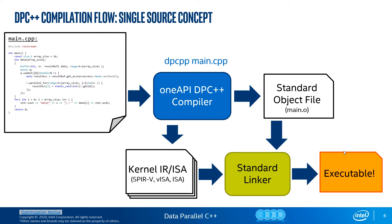The linker merges both binaries generated by the host and device compilers into a FAT binary. In our example, the device code in a FAT binary is an intermediate form that defers the final code creation until runtime. To be more specific, it is a SPIR-V binary format. There is also an option to do a target-specific executable code, and we will cover it in the following slides.